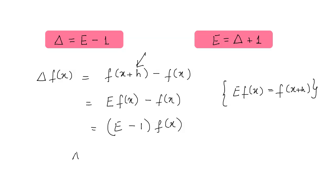Taking f(x) outside, what we get inside the bracket is (E - 1) f(x), and this proves our result: delta equals E - 1. Equivalently, we can write E equals 1 + delta.